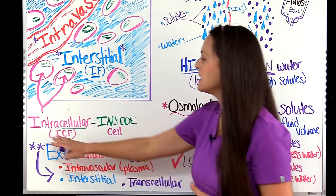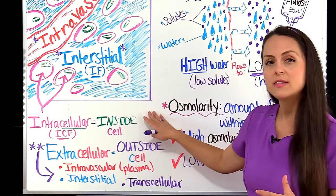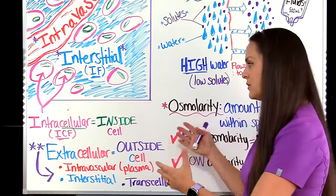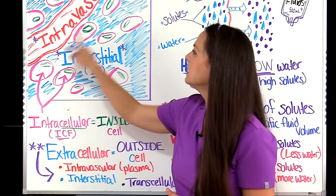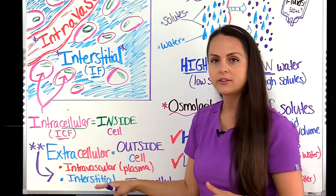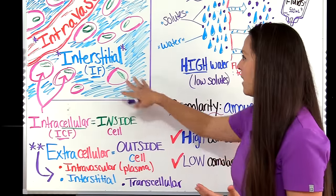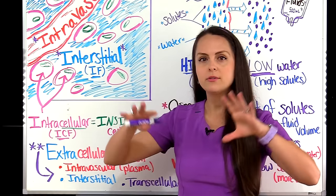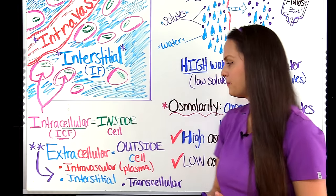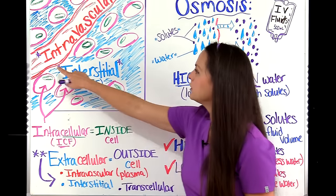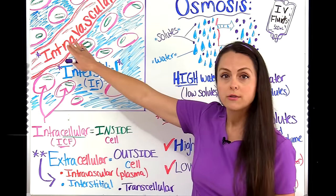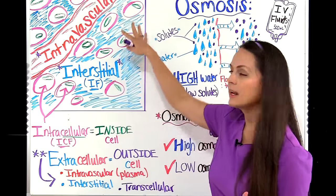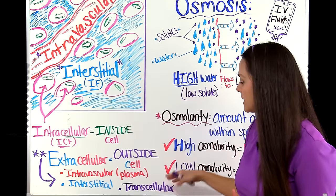The first compartment is known as the intracellular compartment, and this is the fluid found within the cell. "Intra" means within, so this is the fluid inside our cell, as you can see here. Then we have the extracellular compartment, which is the fluid found outside of that cell. "Extra" means beyond or outside. It is made up of the intravascular fluid — also referred to as plasma — the interstitial fluid, which is just hanging out around our cells, and then the transcellular fluid.